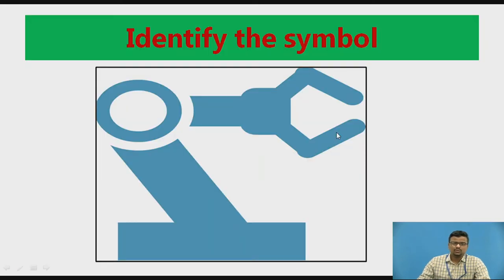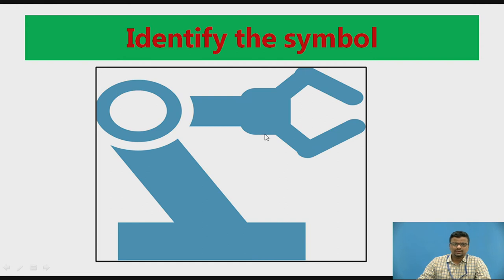There is a question in front of you: can you identify this symbol? This symbol looks like a robotic arm, which is the symbol of a particular manufacturing industry sector — industrial automation.